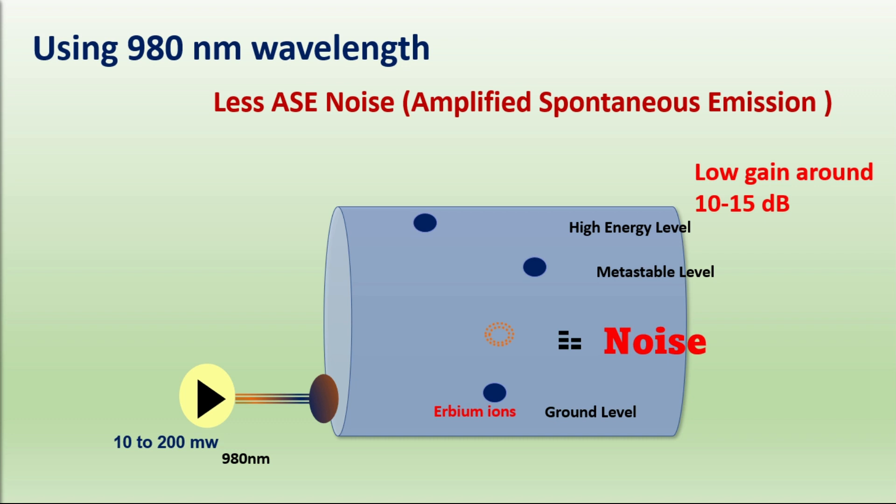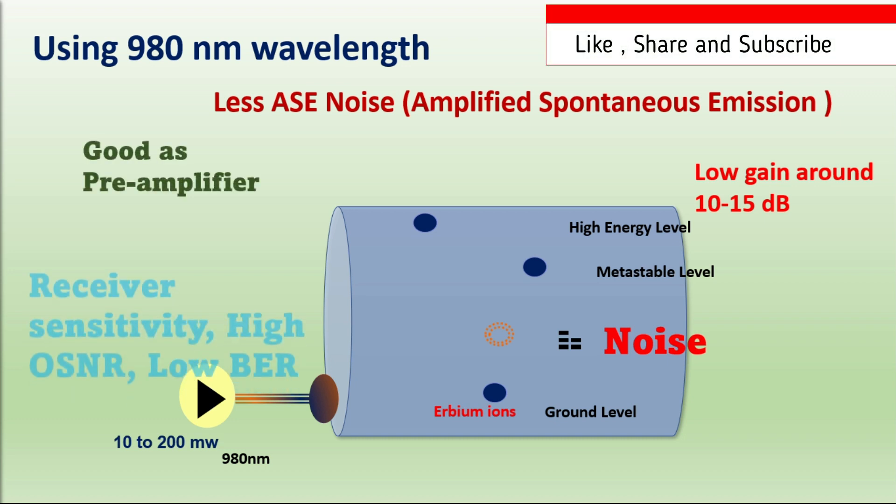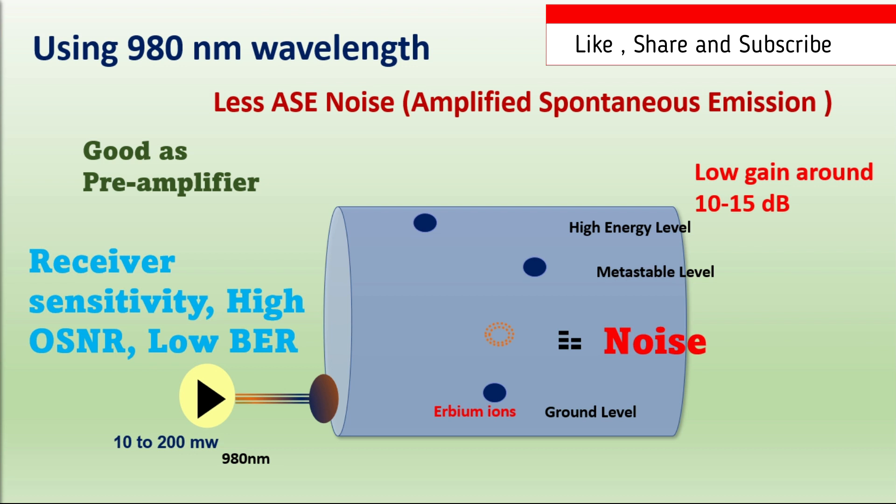And able to amplify optical signal without producing lot of noise. This makes 980 nanometers pumped amplifier good candidate as pre-amplifier where receiver sensitivity and requirements for high optical signal to noise ratio and low noise performance are determining factors.